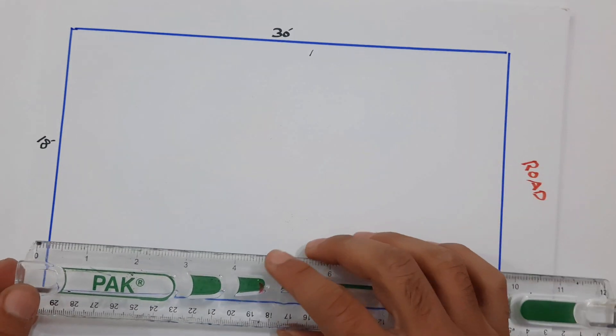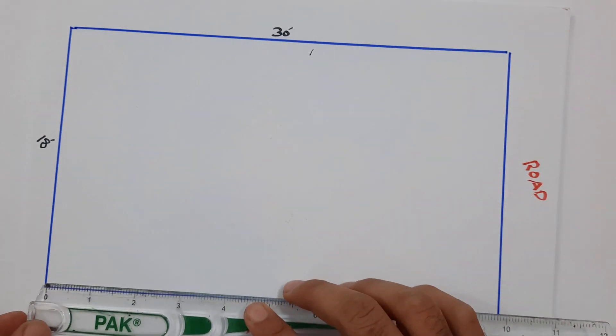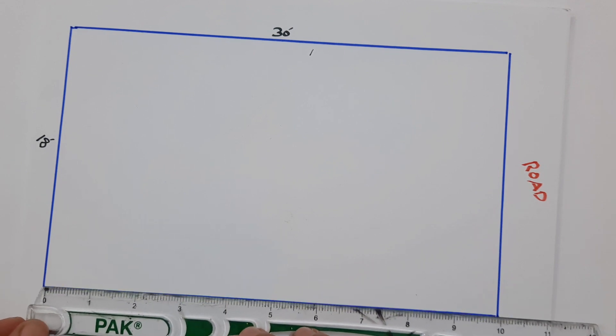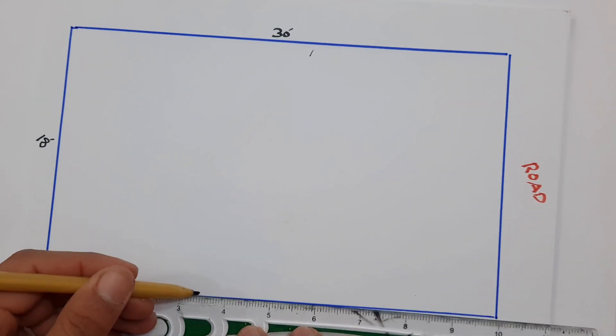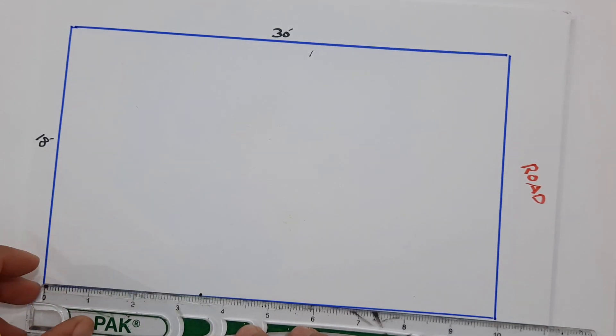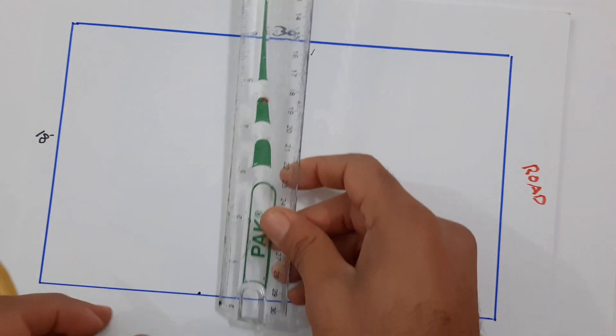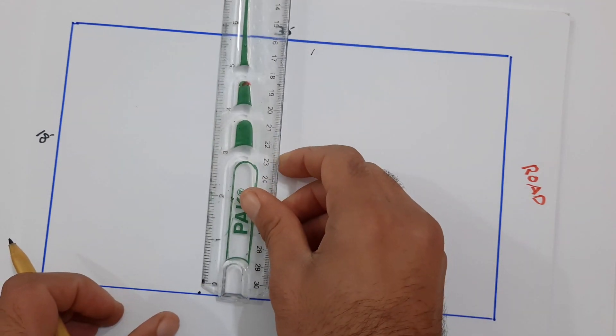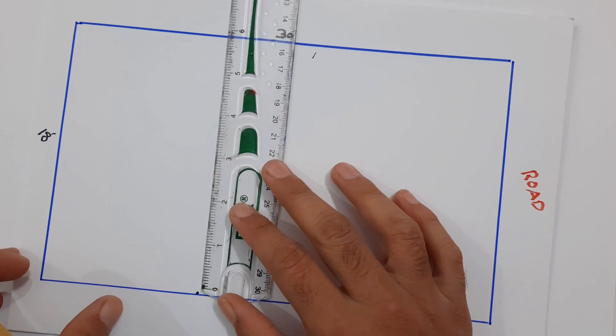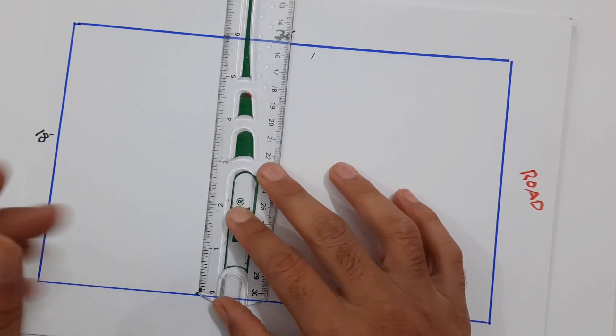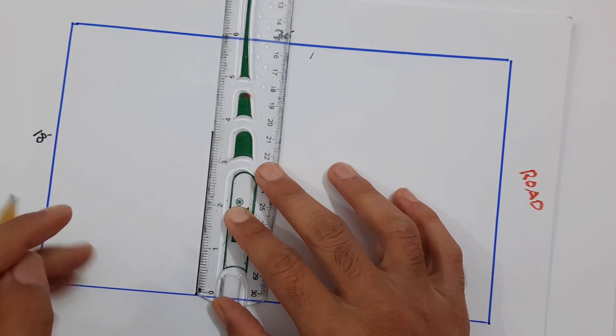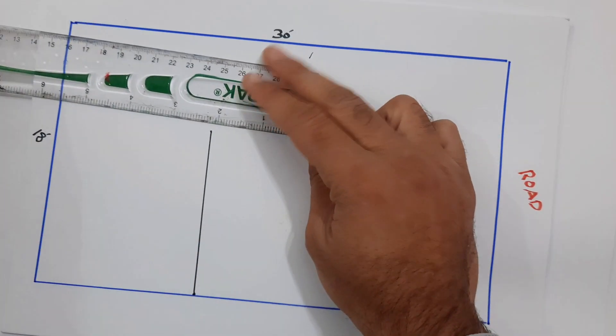Three feet, okay. So here I'm making 10 feet bedroom, so it should be about 10.5 roundabout. Here, from here to here I will make 10 feet. Okay, this is a bedroom.